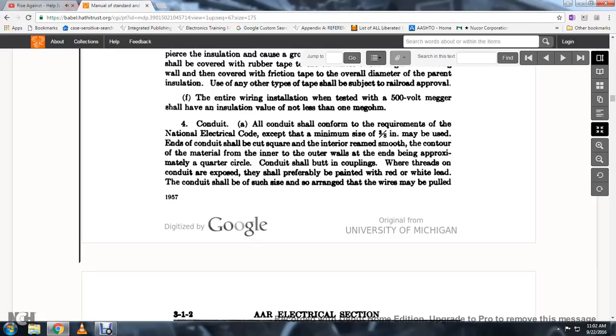Conduit: All conduits should conform with requirements of the National Electric Code, except a minimum size of three-eighths of an inch may be used. Each conduit shall be square and the interior remain smooth with contour of all material inner and outer walls at the end of the beam. Approximately a quarter-circle conduit should be co-built in couplings while threads on the conduit exposed should be preferably painted with red and white lead.